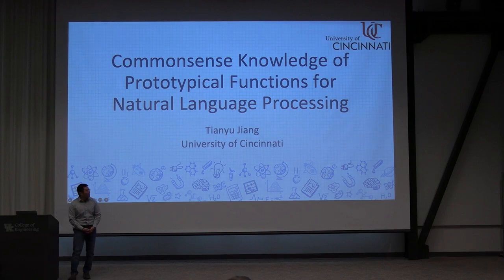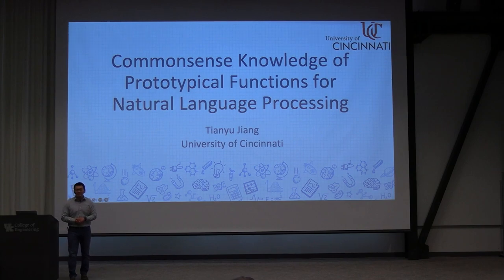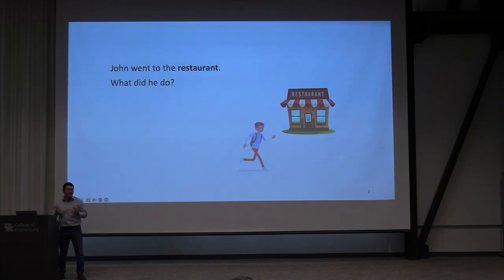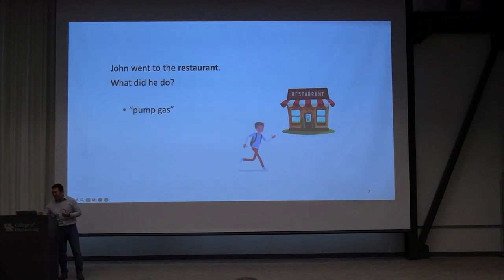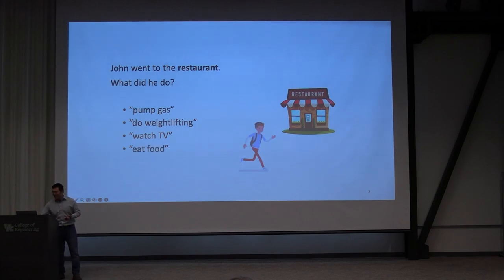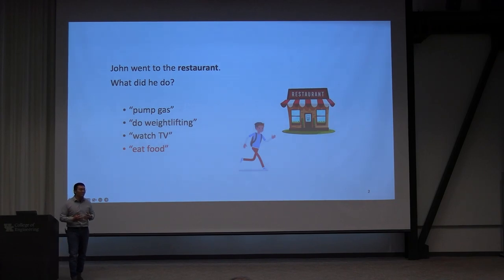I'm very happy to have this opportunity to share my work with you. Today I'm going to present how we use common-sense knowledge from prototypical functions for natural language processing. If I say John went to the restaurant and ask what did he do — on gas? Not likely. Watch TV? Possibly not. Eat? That's the correct answer, because we know that's the typical reason why people go to a restaurant.